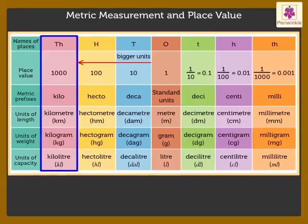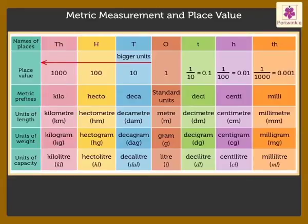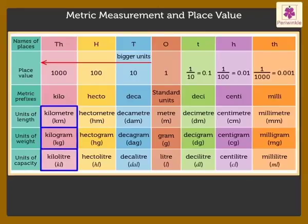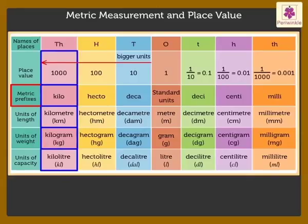Similarly, the units in the thousands column are one thousand times bigger than the standard units. We name these as kilometer, kilogram, and kilolitre, as the prefix 'kilo' means one thousand times.